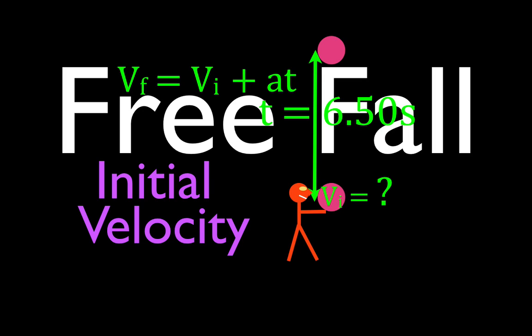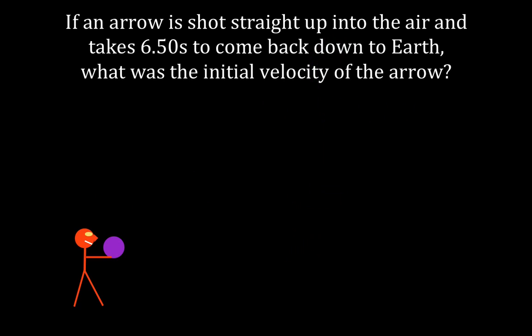Okay, in this video, we're going to go over another problem involving free-fall kinematics. And in this problem, we want to know what is the initial velocity needed to achieve a certain amount of total time up and down into the air. In this case, it's 6.5 seconds, and we want to know what initial velocity is needed for that time of flight.